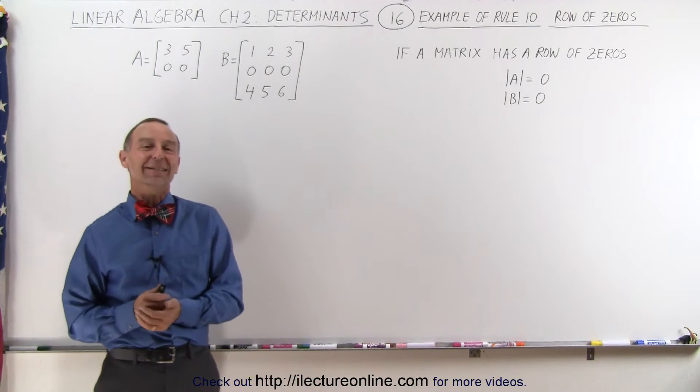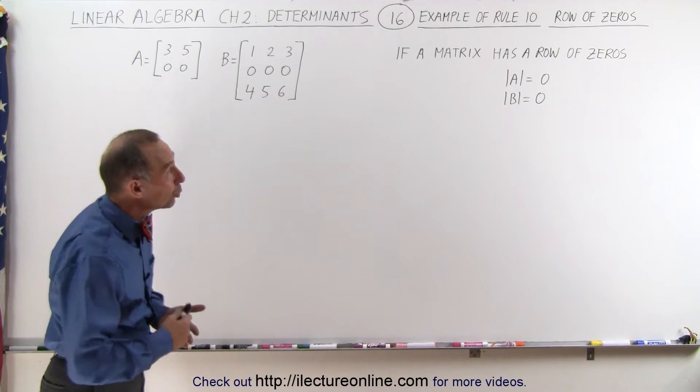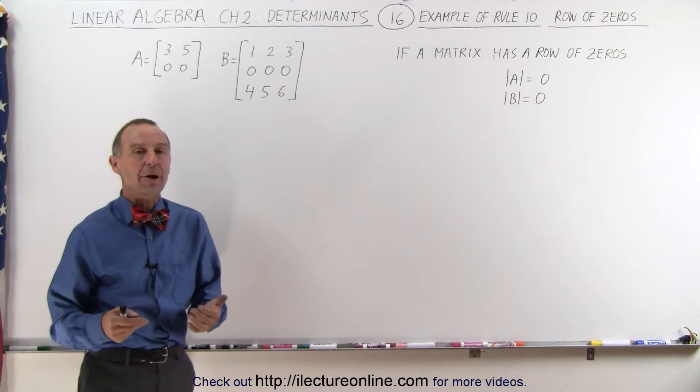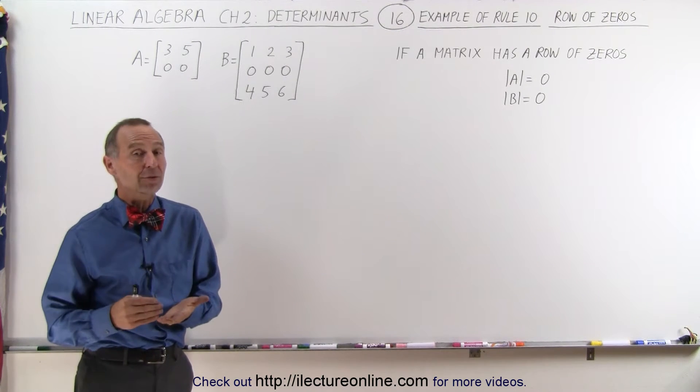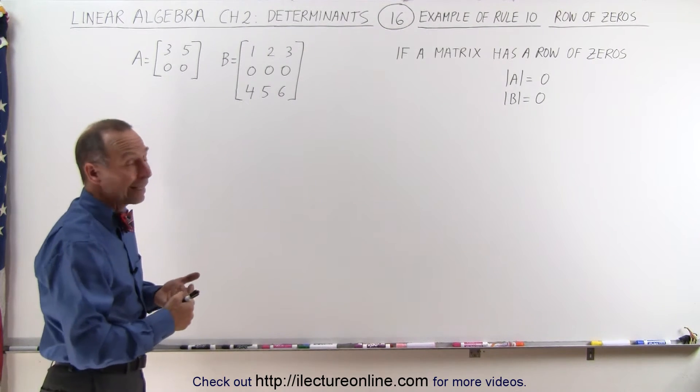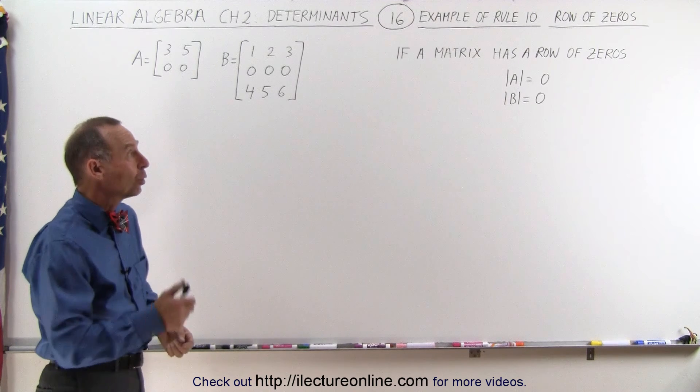Welcome to iLectro online. Now let's take a look at rule number 10. What if a matrix has a row of zeros? The rule says that the determinant of that matrix will equal zero.